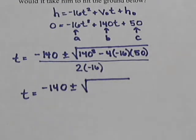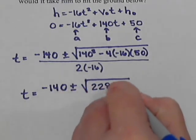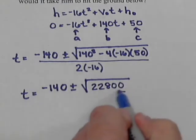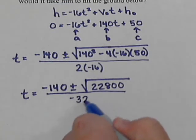If we punch that into the calculator, we get 140 squared, minus 4, times negative 16, times 50. And this comes out with 22,800. And then at this step, we're also going to do the 2 times the negative 16 and get the negative 32 on the bottom.